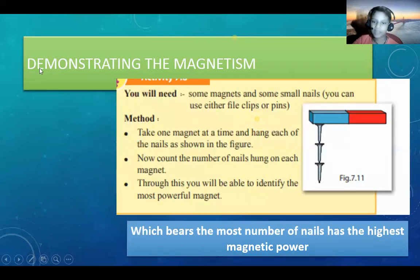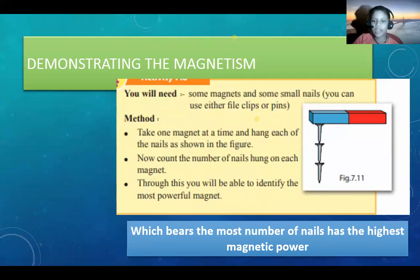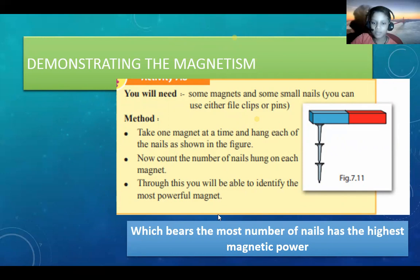Demonstrating the magnetic field. You will need some magnets and some nails. You can also use file clips or pins. Take one magnet at a time and hang the nails as shown in the figure. Now count the number of nails hanging on each magnet. You will be able to identify the most powerful magnet — the one which holds the most nails has the highest magnetic power.